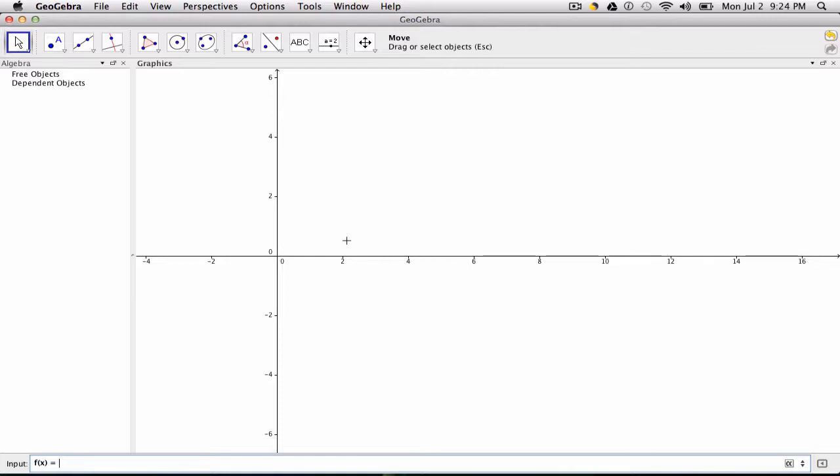Of course we can use any function here. I'm going to type in negative 0.5 times x cubed, so space and x cubed, and then I'm going to add 2 times x squared, so 2 space x squared, minus x plus 1. And then we get our function.